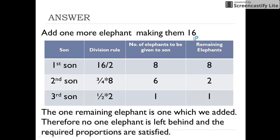Now we divide these 16 elephants among the 3 sons according to the will. The first son gets half of the total elephants, which is 16 by 2, that is 8. The remaining elephants are 8. The second son gets 3/4 of the remaining elephants, which comes out to be 6. So the remaining elephants are 2.